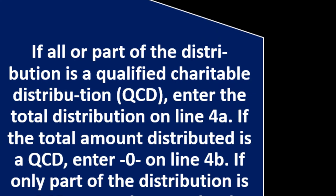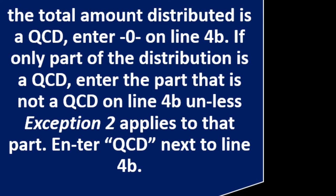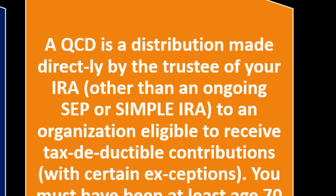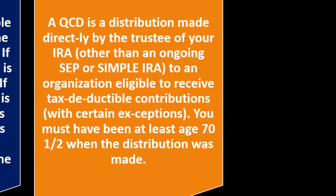Exception three: if all or part of the distribution is a qualified charitable distribution (QCD), enter the total distribution on line 4A. If the total amount distributed is a QCD, enter zero on line 4B. If only part is a QCD, enter the part that is not a QCD on line 4B unless exception two applies. A QCD is a distribution made directly by the trustee of your IRA — other than an ongoing SEP or SIMPLE IRA — to an organization eligible to receive tax-deductible contributions. You must have been at least age 70½ when the distribution was made.